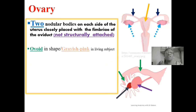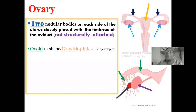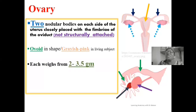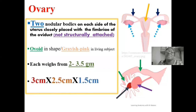Generally, the ovary is ovoid in shape and grayish-pink in a living subject. This color tends to change as reproductive processes commence — for women of reproductive age, the ovary tends to change from grayish-pink to grayish in color. Each ovary weighs about 2 to 3.5 grams, the length is about 3 centimeters, the width is about 2.5 centimeters, and the thickness is about 1.5 centimeters.